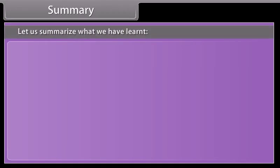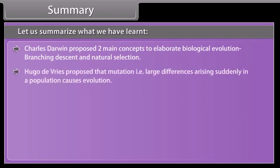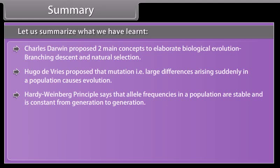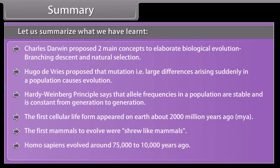Let us summarize what we have learned. Charles Darwin proposed two main concepts of biological evolution: branching descent and natural selection. Hugo de Vries proposed that mutation — large differences arising suddenly in a population — causes evolution. Hardy-Weinberg principle states that allele frequencies in a population are stable and constant from generation to generation. The first cellular life form appeared on Earth about 2,000 million years ago, and the first mammals to evolve were shrew-like mammals. Homo sapiens evolved around 75,000 to 10,000 years ago.